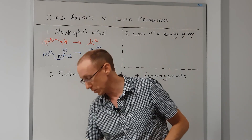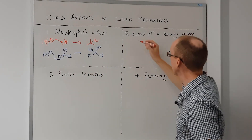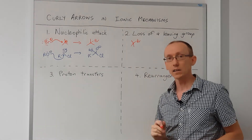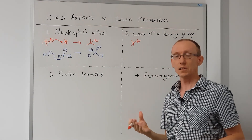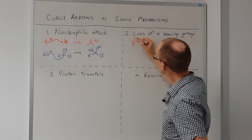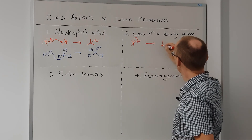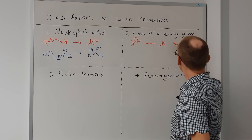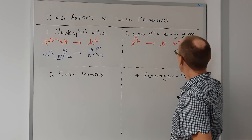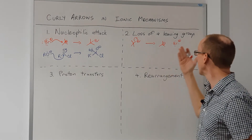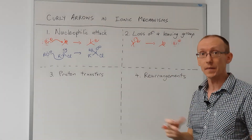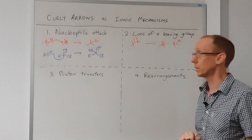Loss of the leaving group can also be very simple. It could be something like a tertiary alkyl halide losing its halogen as a halide, or a leaving group, to generate a carbocation. A tertiary carbocation is particularly stable compared to other carbocations, and so this type of reaction is likely to occur.